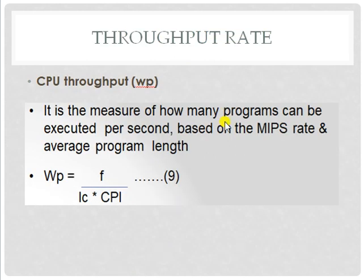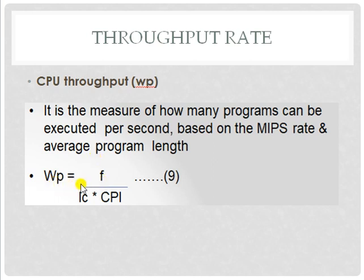The next factor is throughput rate. CPU throughput is represented as WP — the measure of how many programs can be executed per second based on the MIPS rate and average program rate. The equation is WP = F / (IC × CPI).